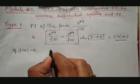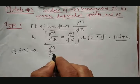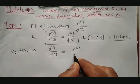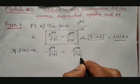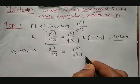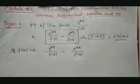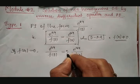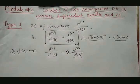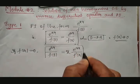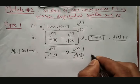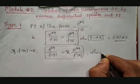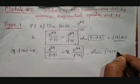If f(a) = 0, then for e^(ax) / f(D), the denominator f(D) must be differentiated once. As a compensatory part, the variable x is multiplied to it. This gives us the way to get the particular integral. The condition remains that f'(a) should not be equal to 0.